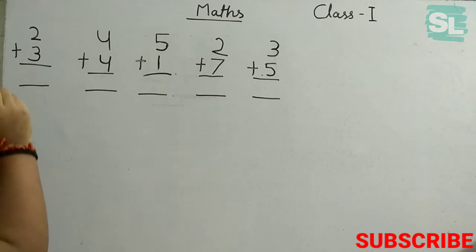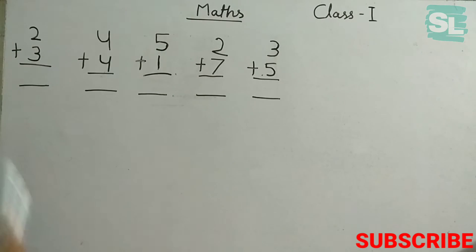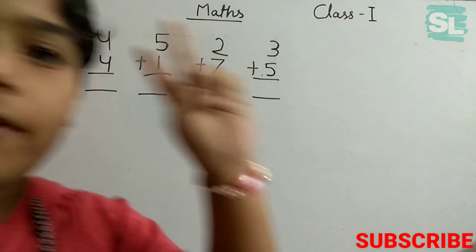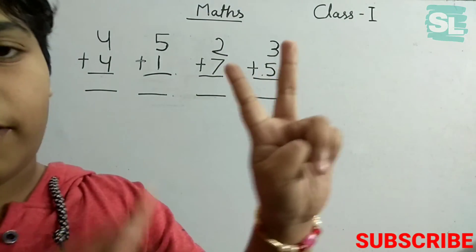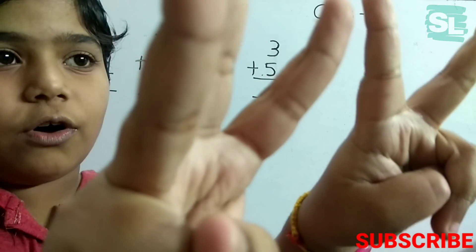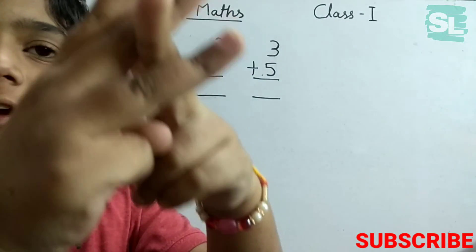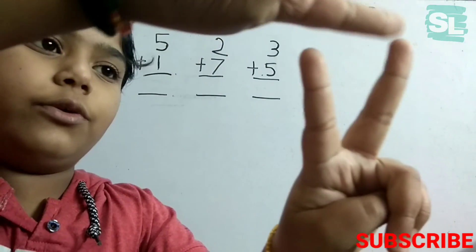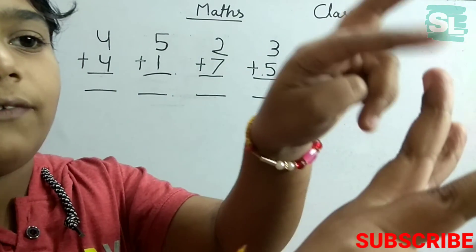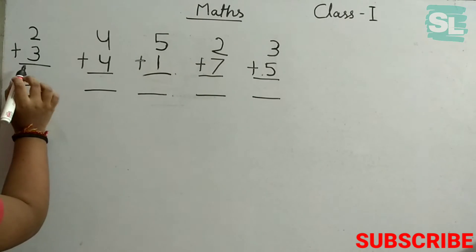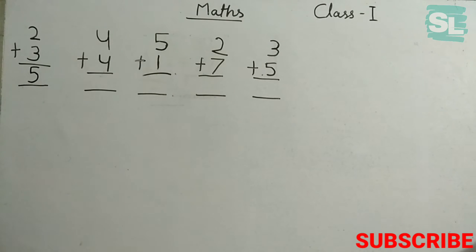2 plus 3. Let's count them by fingers. In the left hand I have 2 fingers, in the right hand I have 3 fingers. So if we mix them together and count: 1, 2, 3, 4, 5. So it will be 5. Let's write 5 as the answer here.